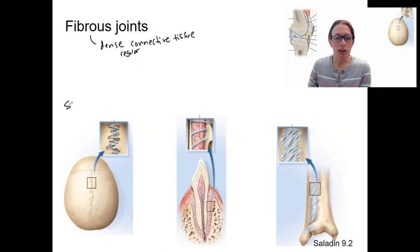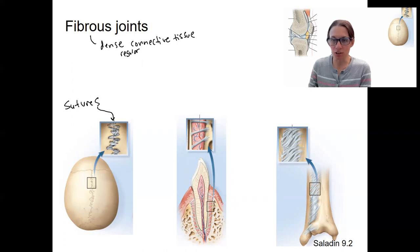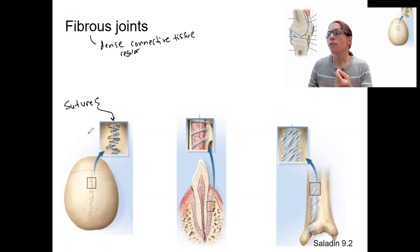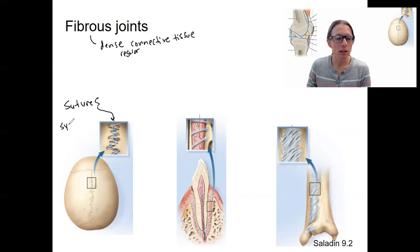The first type are sutures. These are fibrous connections between the bones of the skull, where you actually have separate bones. For example, the frontal bone versus the temporal and parietal bones — there are different bones that make up your skull, connected by these sutures. They are very strong and are classified as synarthroses.